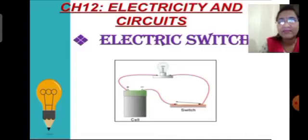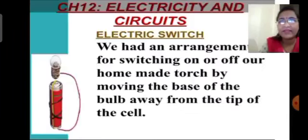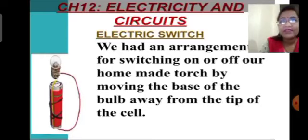We understood in the previous class that in this arrangement of torch bulb and electric cell, if the base of the torch bulb touches the metal cap of the electric cell, it is in the switch-on position. If we move the metal tip of the bulb away from the metal cap of the electric cell, it is in the switch-off position and the bulb will not glow. But this kind of switch is not applicable to all electrical devices, where we would need to move the device near and far from the electric cell.